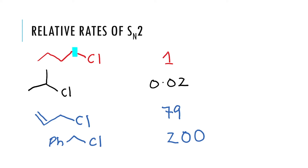Here is the carbon-chlorine bond. When we add a methyl group adjacent to it, the relative rate of reaction goes down to 0.02. This is a fairly substantial drop in the rate of the reaction.